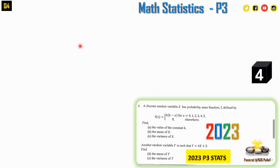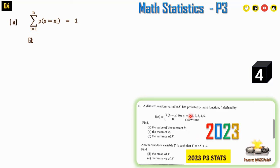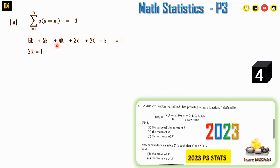Since all probabilities sum to 1: P(X=0) = 6k, P(X=1) = 5k, P(X=2) = 4k, P(X=3) = 3k, P(X=4) = 2k, P(X=5) = k. Summing gives 21k = 1, so k = 1/21.